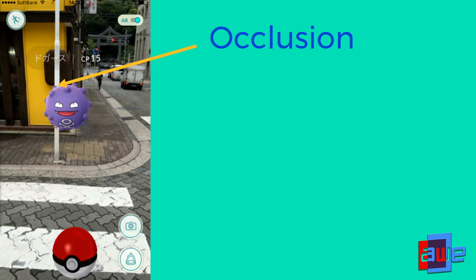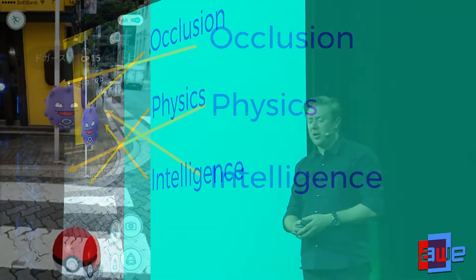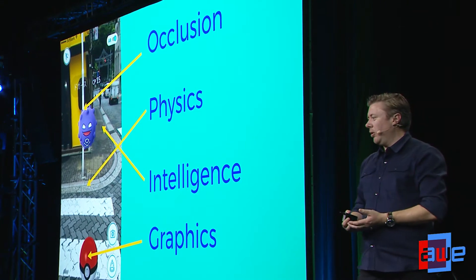Lastly, the content really needs to feel connected to the world. Pokemon Go is a great example of an AR experience that really isn't connected to the world — you can cover up the camera and it's the same game. What you really want is occlusion, where that purple Pokemon should be behind a pole and you see the pole in front of it. You want physics where balls bounce off walls, intelligence where the system knows the Pokemon should be on the sidewalk not the road, and consistent graphics where lighting and shadows look appropriate. All of those aspects are delivered through AR cloud technology.